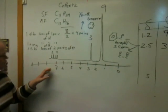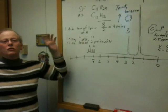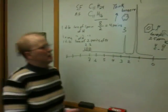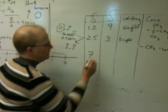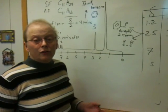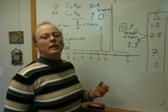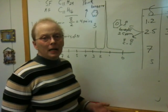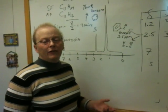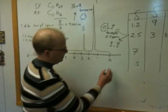Alright, next. Last but not least. 7 parts per million. That should send off bells in your head. 7. 7 is aromatics territory, right? One of the things that causes tremendous chemical shift change are pi bonds. Pi bonds create magnetic fields that add to the big field. Remember the big field?